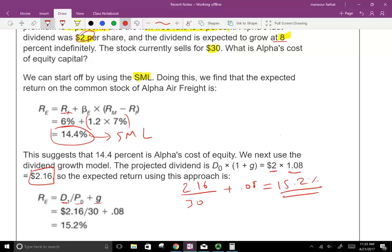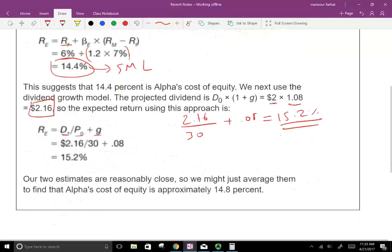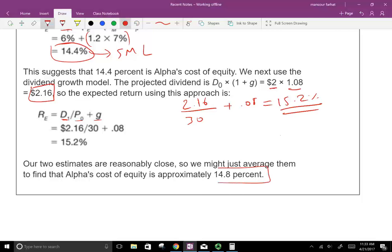Now the question is, which one should we use? Which one is more accurate? They're both estimates. So what do we do? Just go ahead and run the average. And the average is 14.8%. So take 15.2% plus 14.4%, divide by 2, and you're going to get 14.8%. So an approximate cost of equity for this company is 14.8%. So this is basically a way out just to be on the safe side.